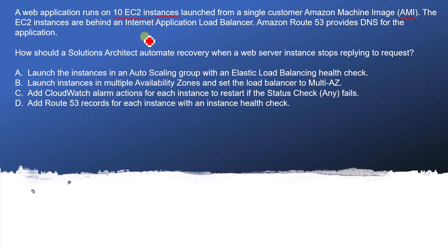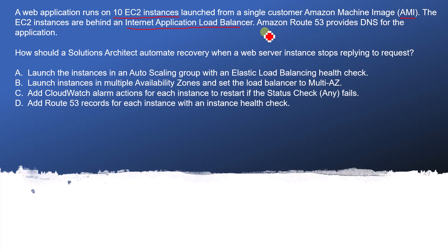The EC2 instances are behind an ELB — mark the ELB part. Amazon Route 53 provides the DNS, which is its basic concept, and I am not highlighting it because it is not very relevant here. The main thing is that we need to keep 10 EC2 instances up at all times.